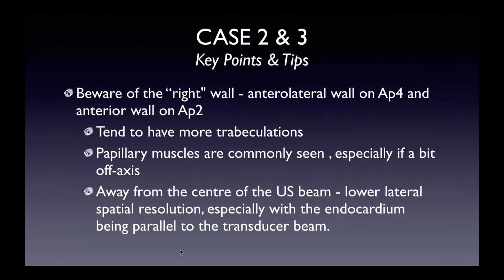A couple of tips and tricks: beware of that right wall — the anterolateral wall on the apical four-chamber view, and the anterior wall on the apical two-chamber view. These walls and the apex tend to have more trabeculations compared to the infero-septum on the apical four or the inferior wall on the apical two. The papillary muscles are commonly seen, particularly the anterolateral papillary on the apical four-chamber view. The right-sided wall tends to be away from the center of the beam, with lower spatial resolution more laterally, especially since the endocardium is parallel to the transducer distribution.